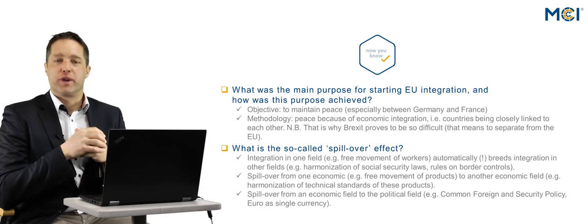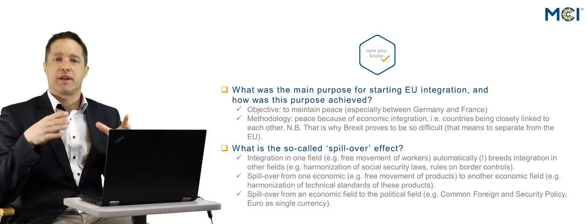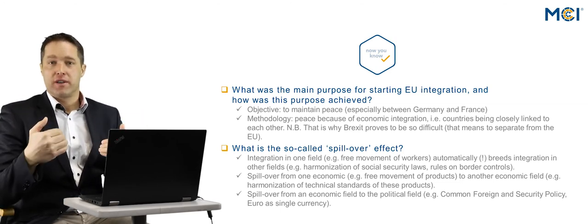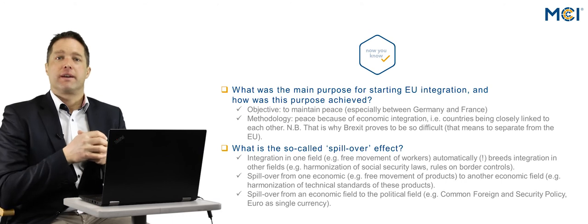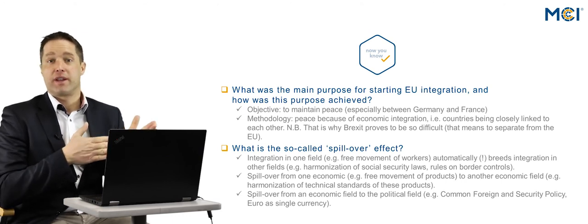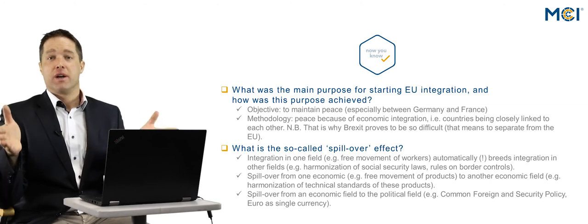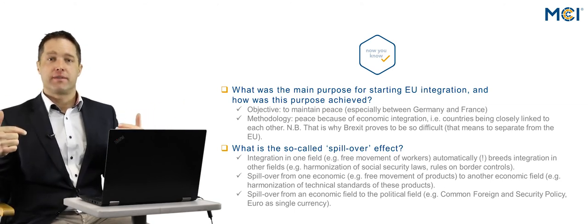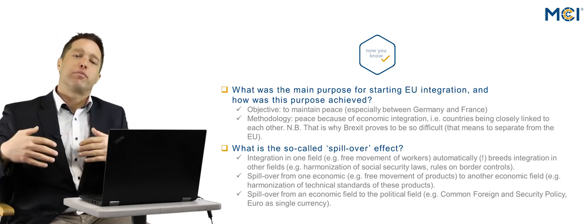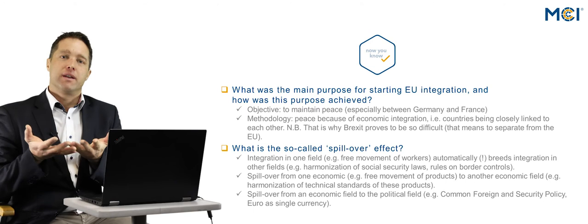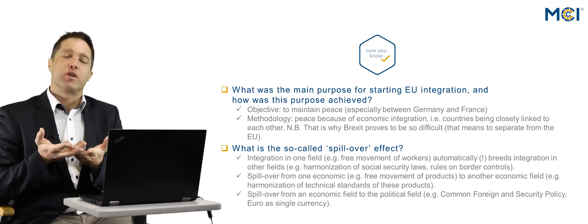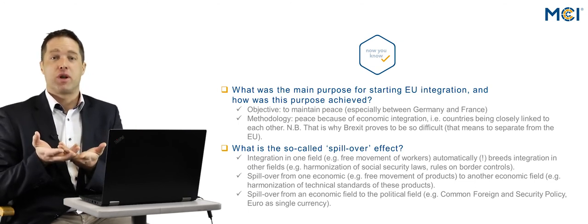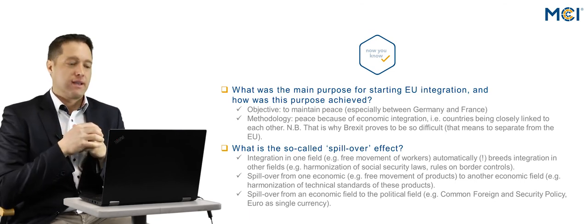So now you hopefully know what the main purpose for starting EU integration was. It is very important to emphasize, even today, that the objective was to safeguard peace. In retrospect, we can clearly say that this project was successful — we have had the longest period of peace in EU history. The methodology was to make countries work together on an economic level first, and by bringing their economies, their law, and also their societies closer together, that made war literally impossible.